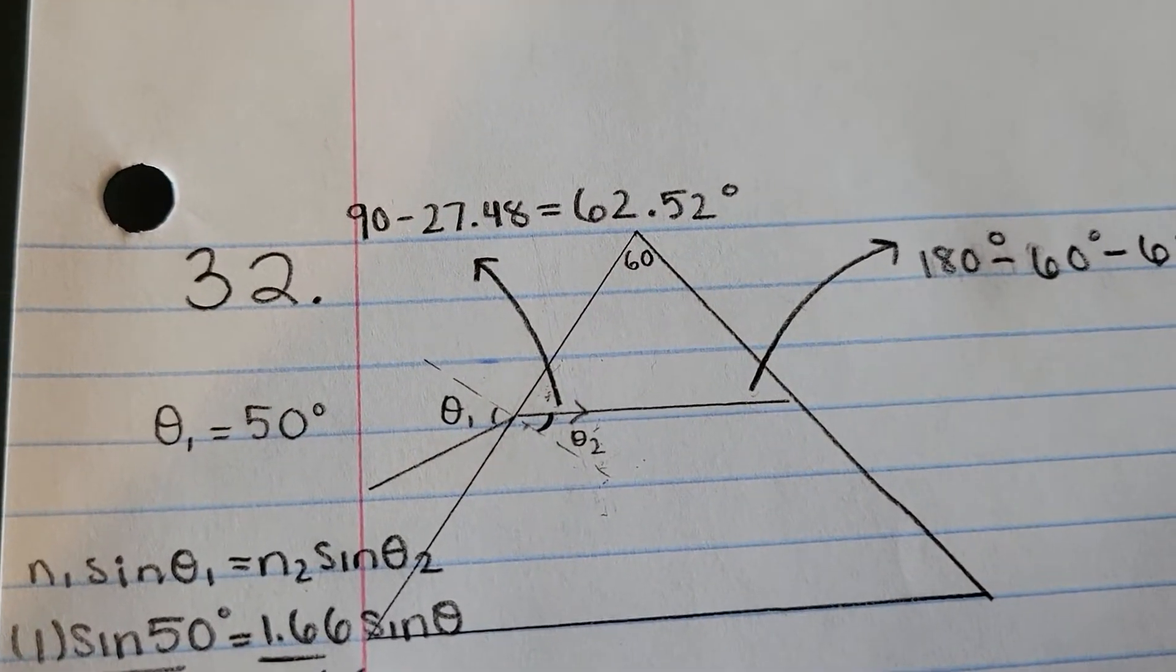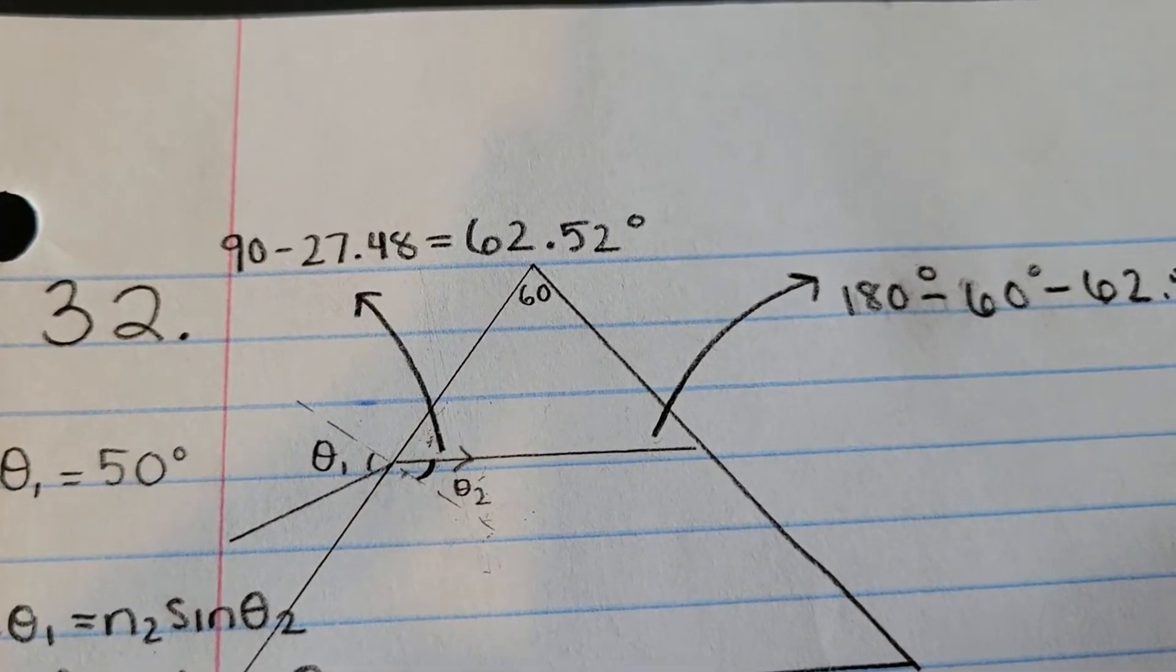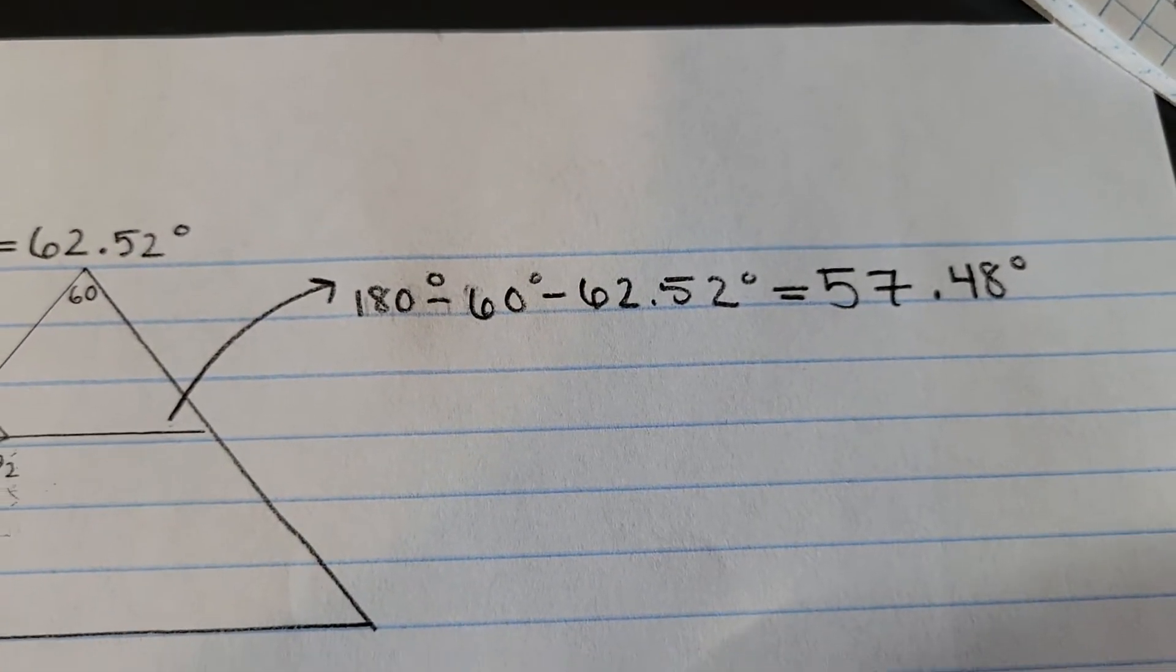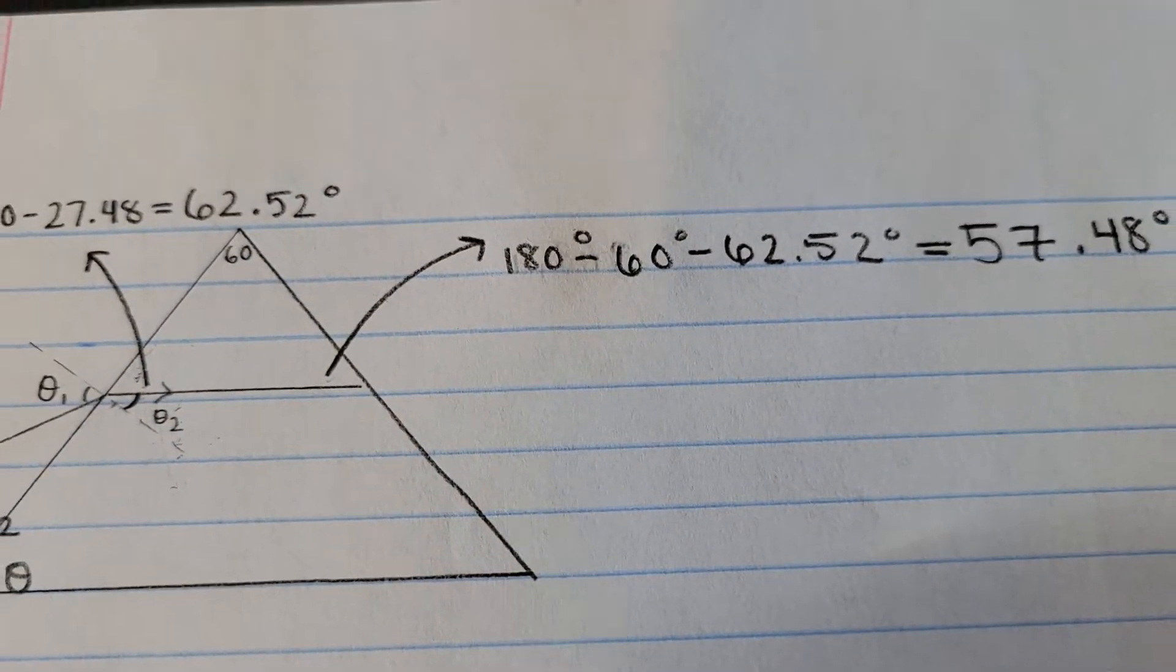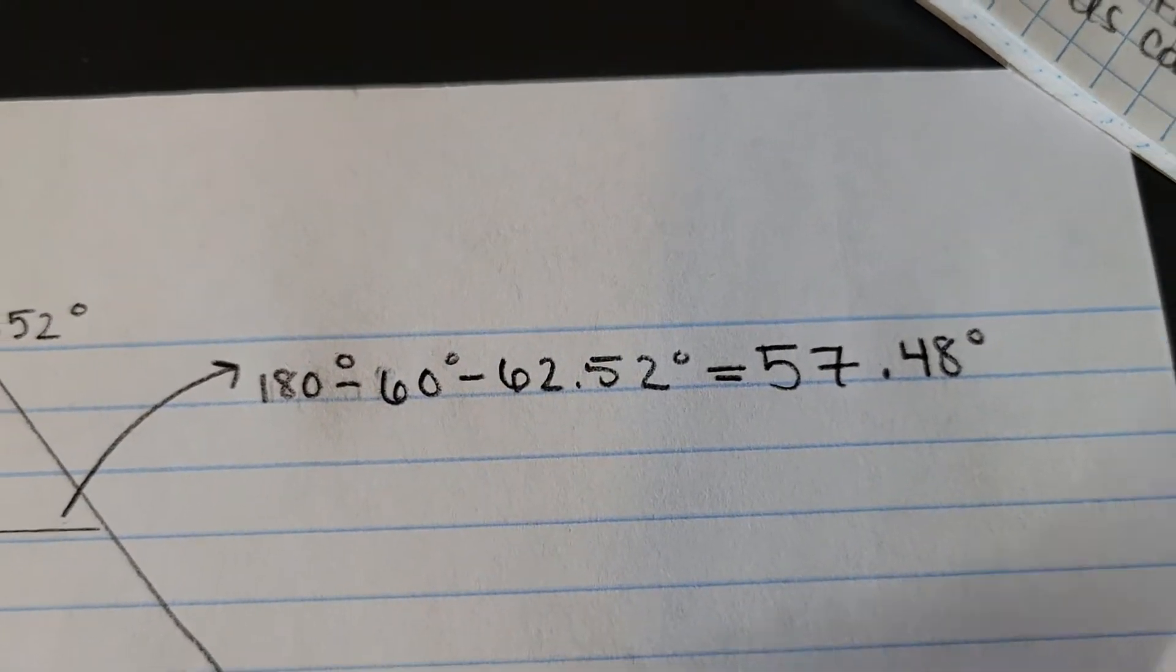Okay, so I took 90 and I did 90 minus 27. I got 62.52. And then if you take 180, subtract it by that 62.52, and you give an angle of 60 degrees, you get 57.48.